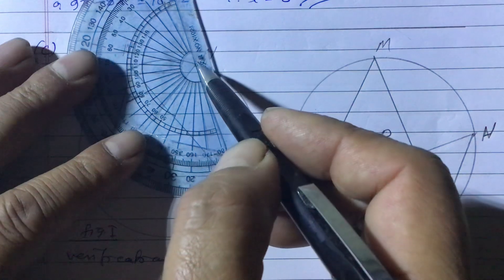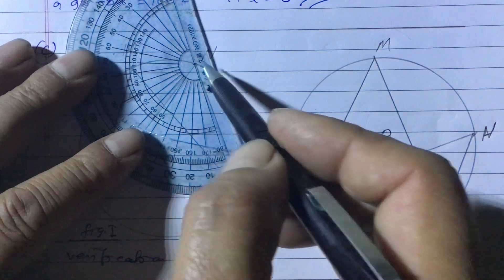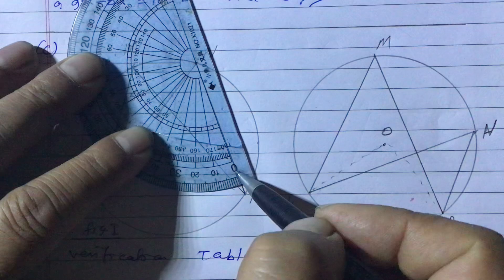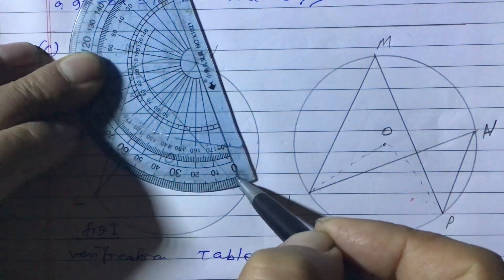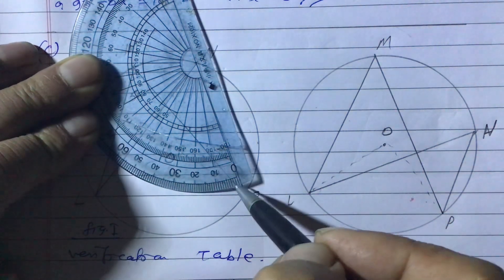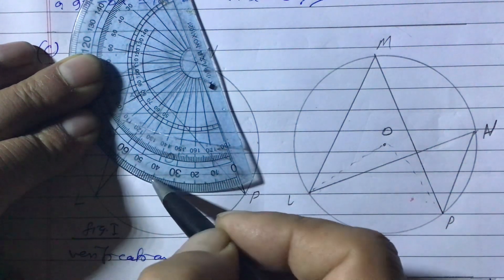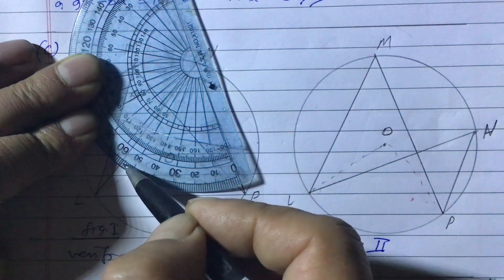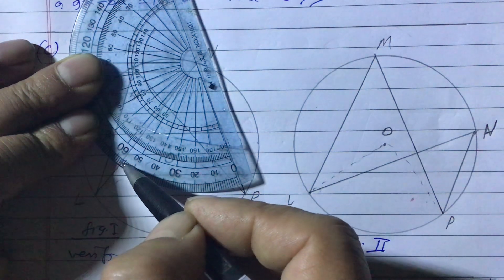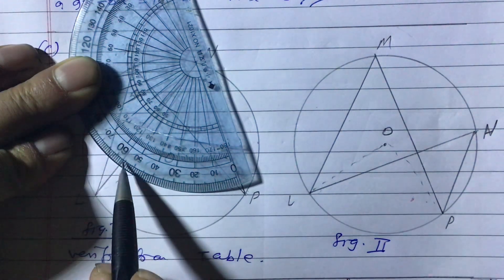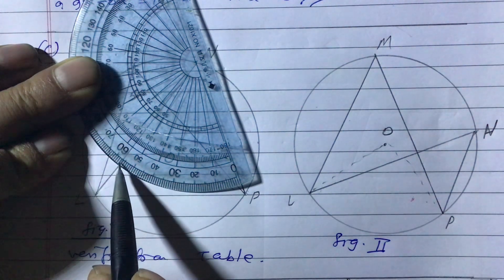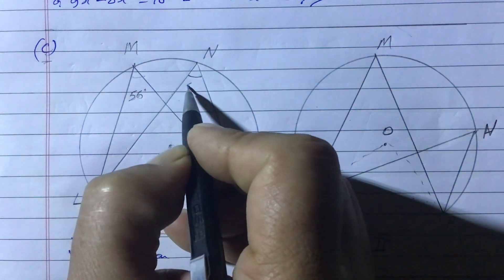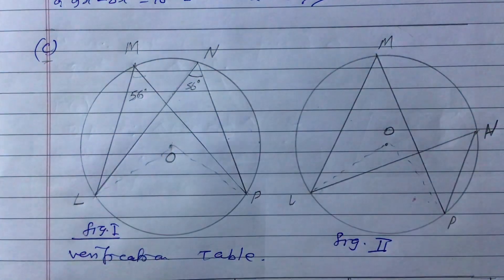For the second inscribed angle LNP in figure one, overlap the protractor line with one side, keeping center at vertex N. Zero is again on the upper side. Counting: 10, 20, 30, 40, 50, 55, 56 — this is also 56 degrees. Both angles are equal: 56 degrees each.